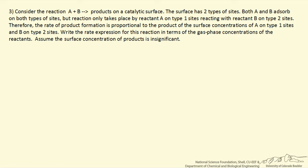But we're going to assume that reaction only takes place for A molecules on type I sites reacting with B molecules on type II sites. This means our rate of product formation is going to be proportional to the surface concentration of A on type I sites and the surface concentration of B on type II sites.